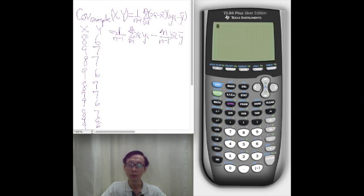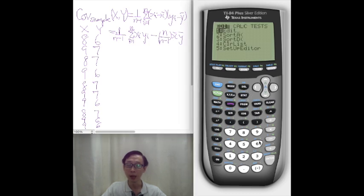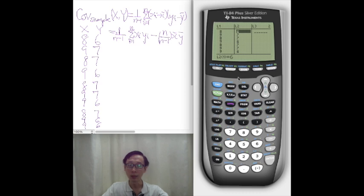So let's suppose as an example we use these ten pairs of observations, and we enter those values into list 1 as my x random variable and list 2 as my y random variable. These are sample observations, so let's enter them and then perform a two-variable statistics calculation.